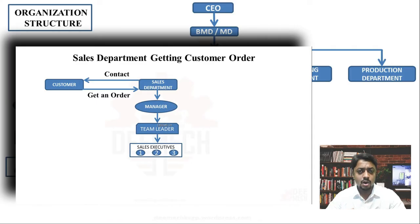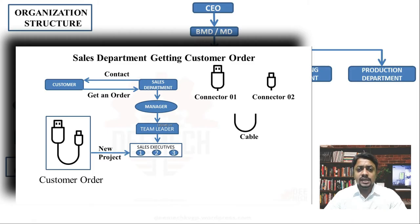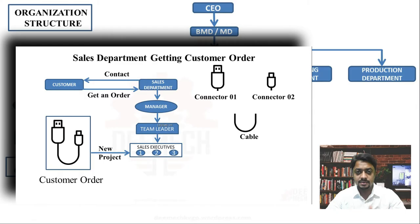Delivery must happen on time as promised to the customer. For example, the customer needs a simple cable harness with two separate end connectors connected to a single cable. In our example, the customer is not a single person but another business organization that needs this product as a sub-assembly. The engineering department will work on this customer order, but first let us understand the role of the purchase department.